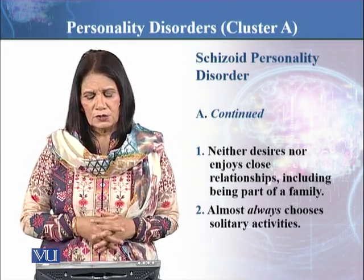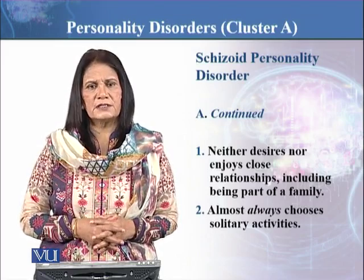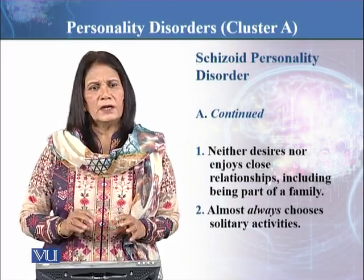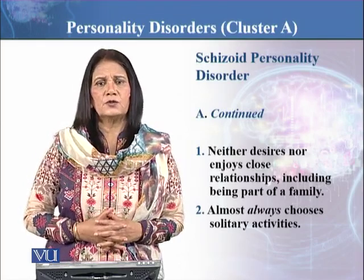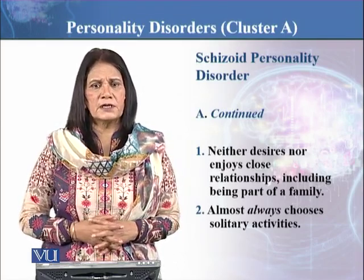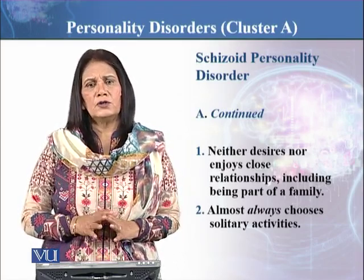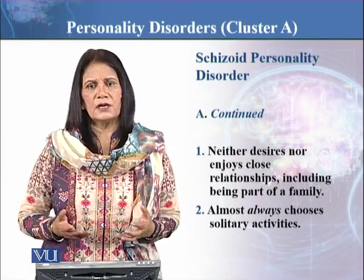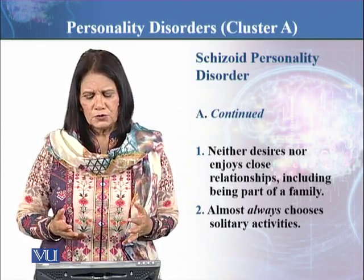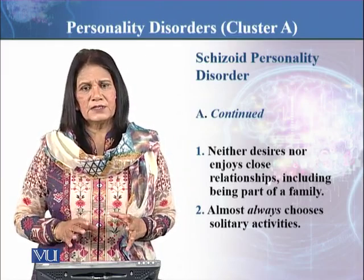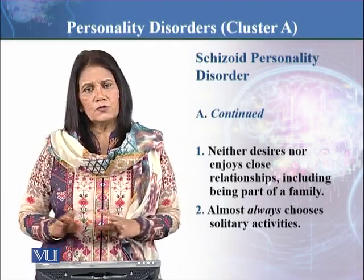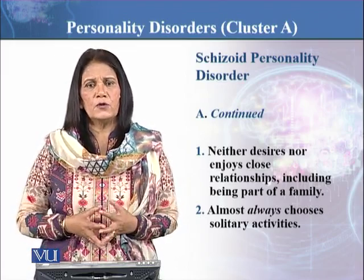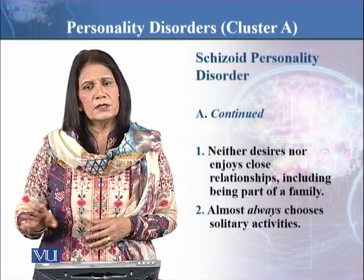The second symptom is that he or she almost always chooses solitary activities. If given a choice — for example, a family picnic — the person will be very resistant, or will prefer to stay home. If they have a choice, they choose activities which are solitary, things they can do alone, even hobbies that involve being by oneself.